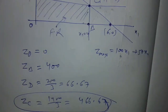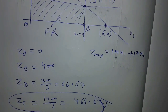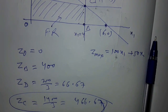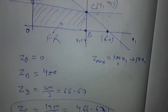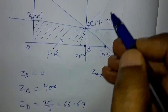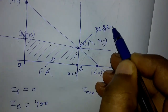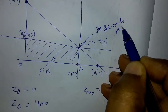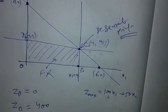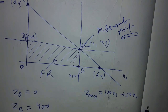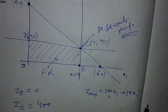Obviously, 466.67 is the maximum value. In the case of degeneracy, we always get a solution. Point C is the degenerate point. Thank you.